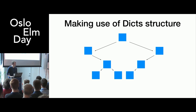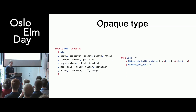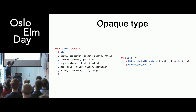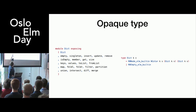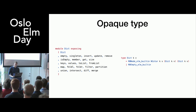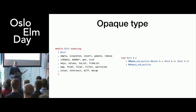It's just not possible to do. The reason is that dictionaries are opaque. This is from the standard library — this is the definition of a dict — and as you can see, we don't actually expose the constructor values for the custom type of dict. So there's no way to read the structure of a dictionary, and therefore no way to implement that optimization. It just cannot be done.